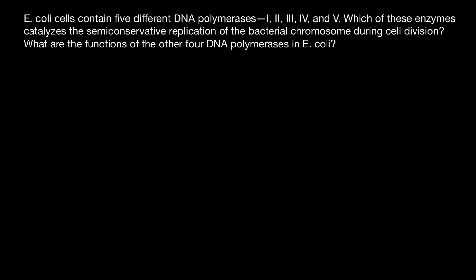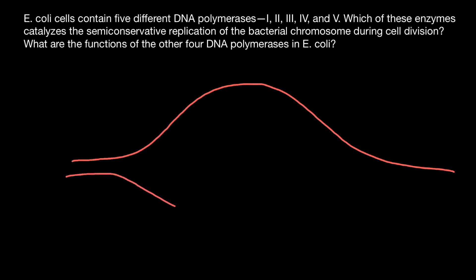First of all, let me show you a replication bubble. So this is one strand of the double-stranded DNA, and here is another strand, and we see here a replication bubble. Here is going to be the initial primer on one strand, and here is going to be the initial primer on the other strand, which would be the basis for a new DNA strand to be built — a complementary strand to each of the original strands of the DNA.